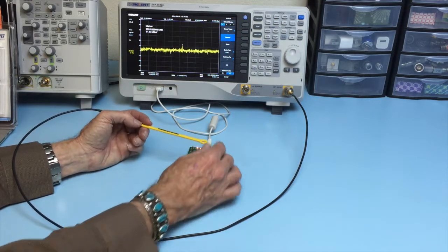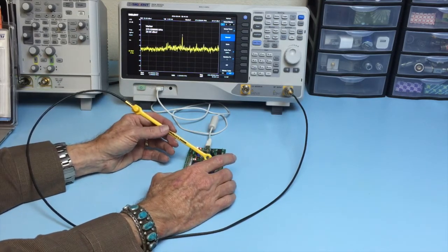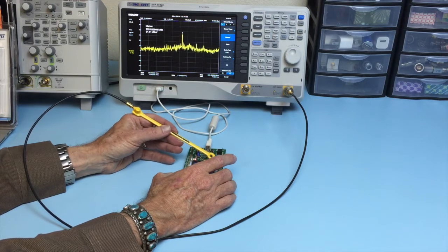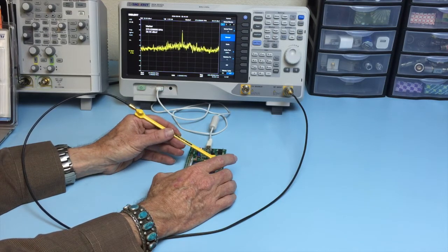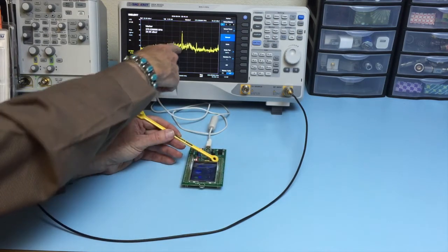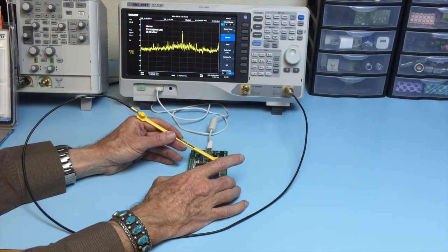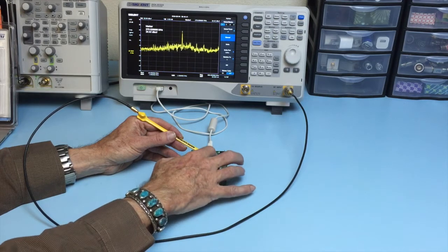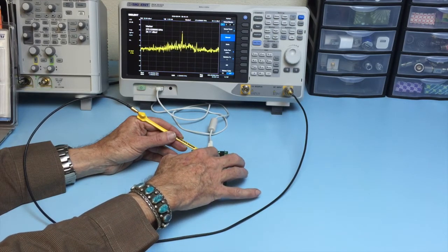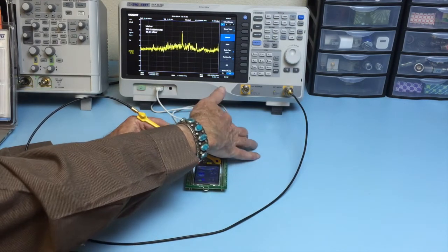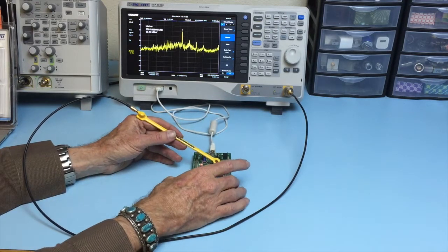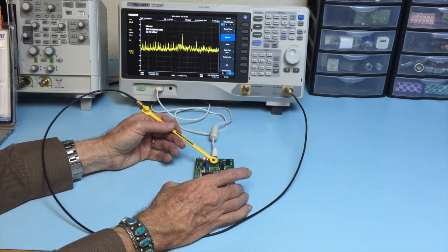Now it's not necessarily an issue if you probe a particular spot here and we see that there's a high 270 MHz. That's not necessarily an issue unless that energy finds a way of coupling out to say a cable. And so let's start probing along the cable.